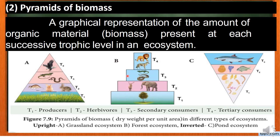Next ecosystem is the forest ecosystem. In the forest ecosystem, the amount of organic material decreases at higher trophic levels. So that is why this pyramid of biomass is also an upright pyramid.